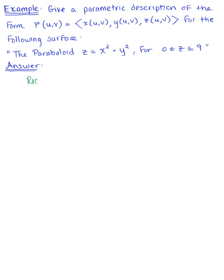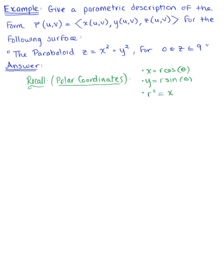To get started, recall the conversion formulas from polar and cylindrical coordinates. We know that x is defined as r cosine of theta, y is defined as r sine of theta, and the radius squared is equal to x squared plus y squared. I bring this up because of that third formula — the paraboloid looks similar to the Pythagorean identity defined by x, y, and the radius.